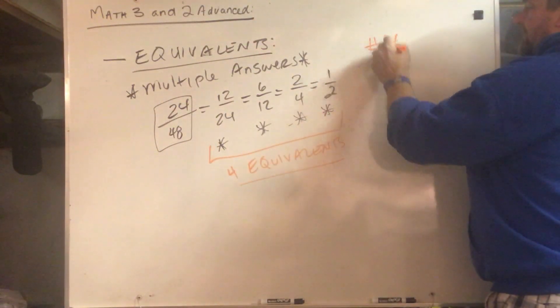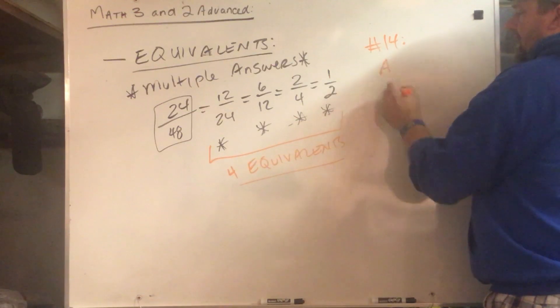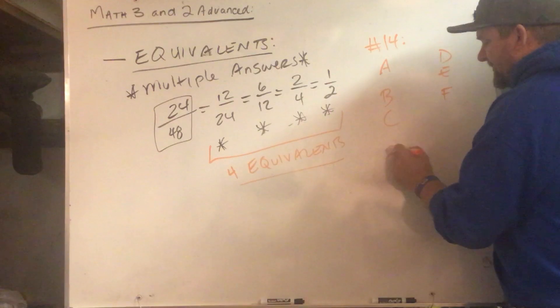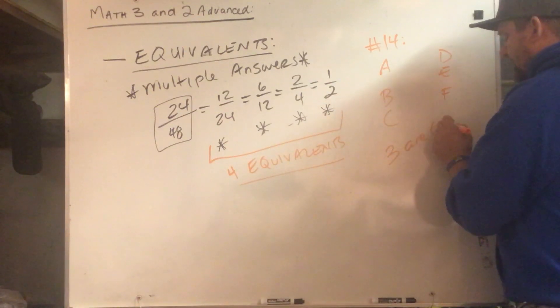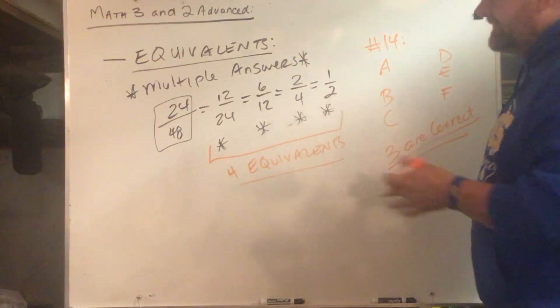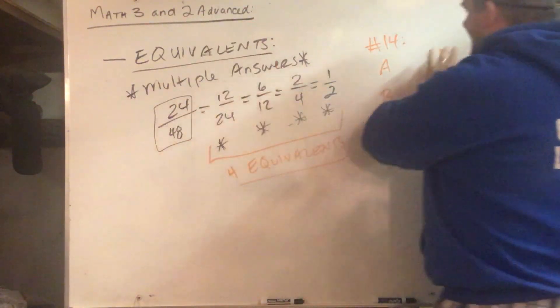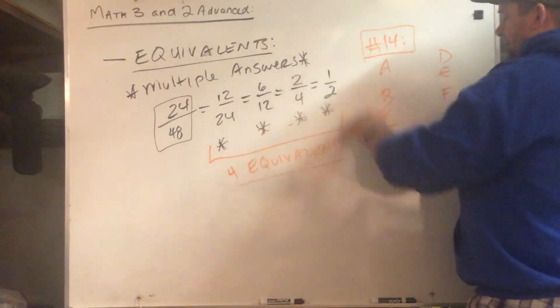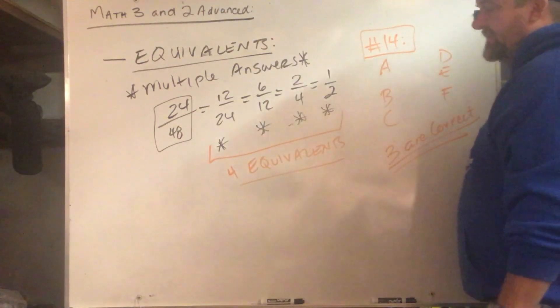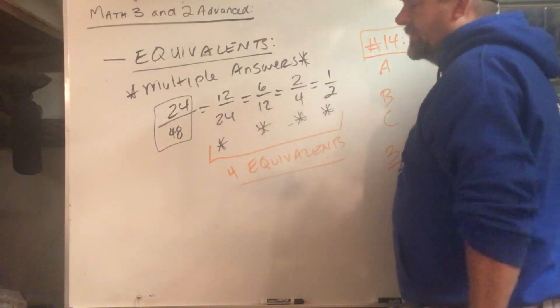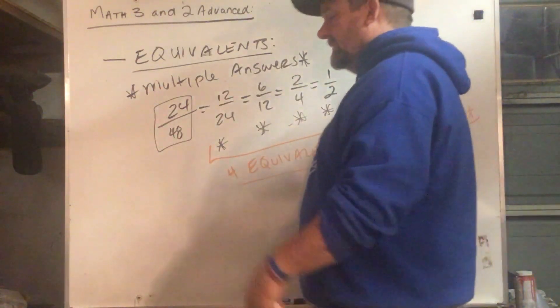Number 14 has A, B, C, D, E, and F and three are correct. That's the biggest thing about this little packet we gave you. It's got a lot of equivalents and there are multiple answers to some of them, so make sure you're paying attention to that as you work on it.